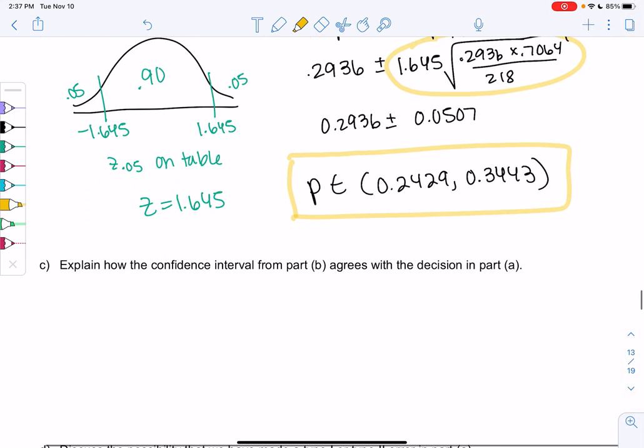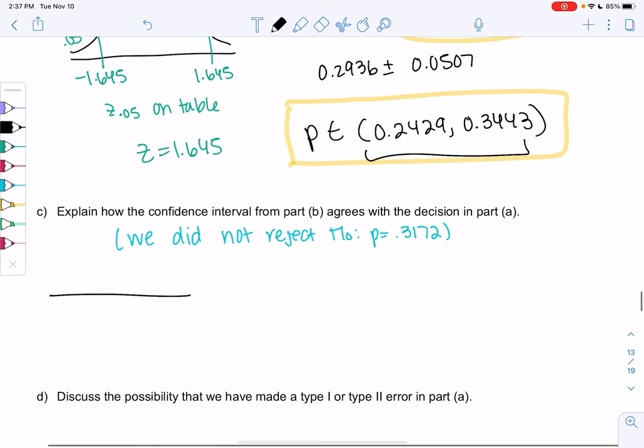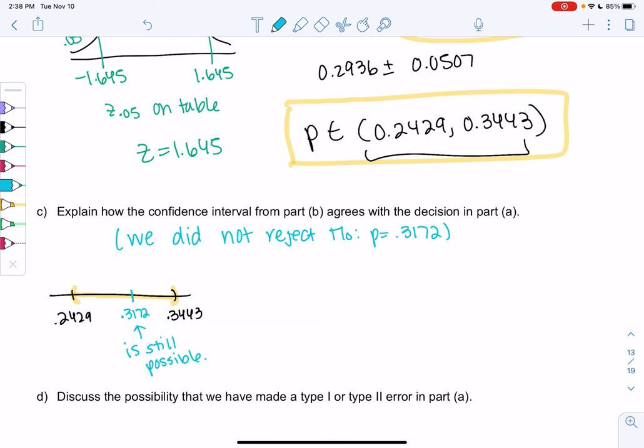So how does this agree with the hypothesis test? Our decision in part A was we did not reject H0, and H0 was P equals 0.3172, meaning we couldn't prove it's different. So it agrees because if P is in this interval 0.2429 to 0.3443, any number in this interval is possible, meaning 0.3172 is still possible because it's in between the numbers. So it doesn't mean it equals 31.72%, but it means it's still possible.